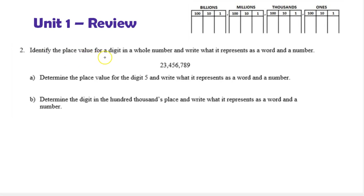Question 2. Identify the place value for a digit in a whole number and write what it represents as a word and a number. Here's our number — I'm noticing there's three groups, so in my place value chart I'm going to need the three groups to the right, starting with millions. The number is 23,456,789. We're asked to determine the place value for the digit 5. Notice five is in the ten thousands place, so its place value is the ten thousands place.